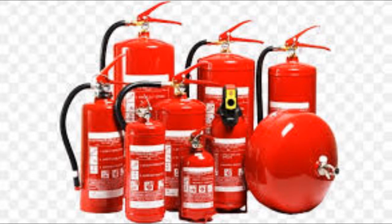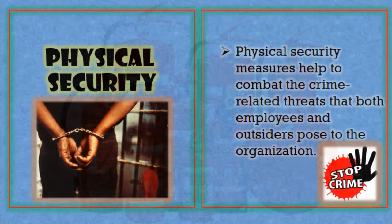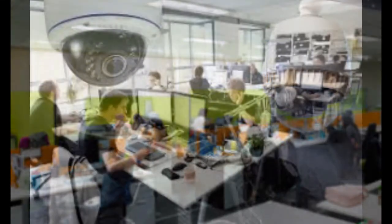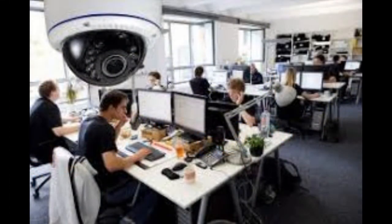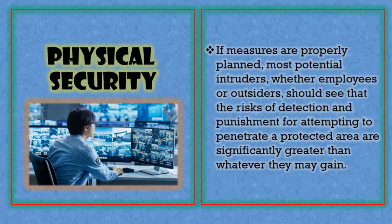Physical security measures help to combat crime-related threats that both employees and outsiders pose to the organization. The target is not only outsiders, because violators are not always coming from outside — sometimes there is what we call an inside job. With CCTV cameras, we can see the movements of every employee to check if they are doing anything illegal.